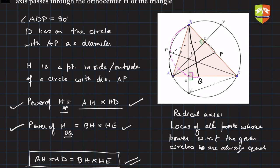To reiterate: the power of H with respect to the first circle is AH × HD; the power of H with respect to the second circle is BH × HE. The theorem claims H lies on the radical axis of both circles. Since the radical axis is the locus of points where the power with respect to both circles is equal, we must prove AH × HD = BH × HE.